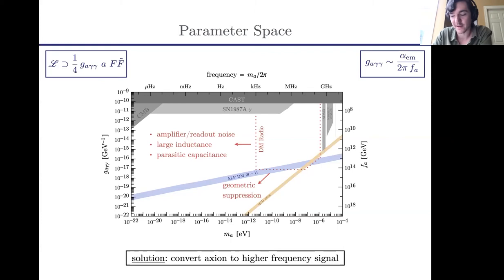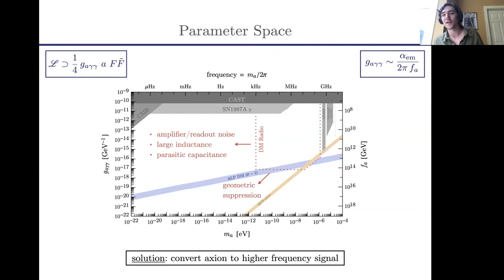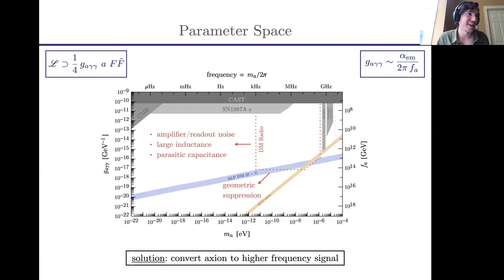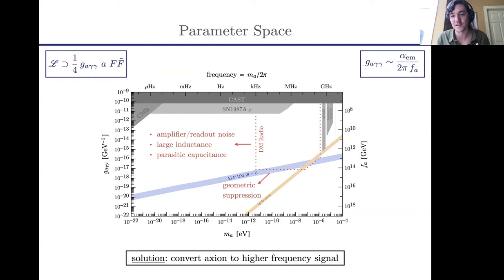There is a question. You mentioned DM Radio — could you remind me what ABRACADABRA did? So the reason I'm not showing ABRACADABRA right now is because they've actually merged into the same experiment. They were different ideas — ABRACADABRA had this idea to do a broadband thing as well as the LC circuit approach, and they had some prototype stages not really digging into new parameter space — but because they were very similar ideas and for funding reasons, they've kind of turned into the same experiment. So you should think about the DM Radio projection as representative of both collaborations roughly.